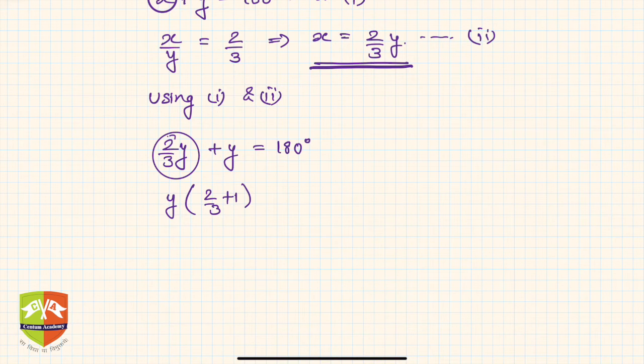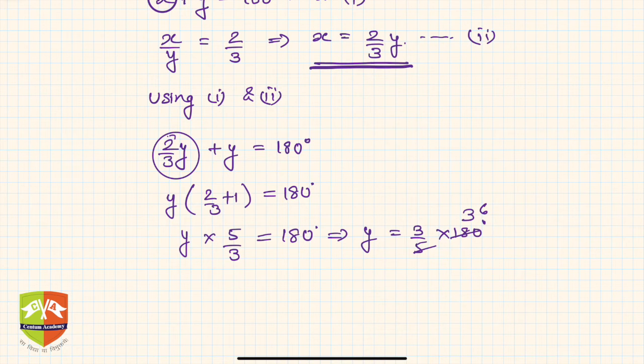Which is nothing but y, and you can take the LCM and you'll get y times 5 by 3 equals 180 degrees. So this implies y is equal to 3 upon 5 into 180 degrees, which is 108 degrees.